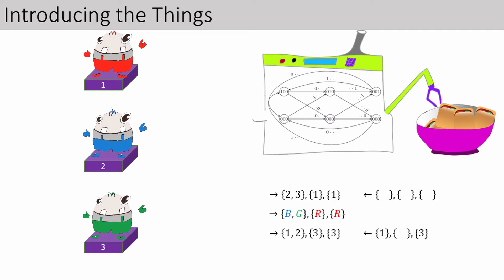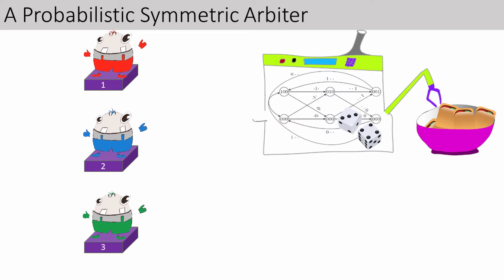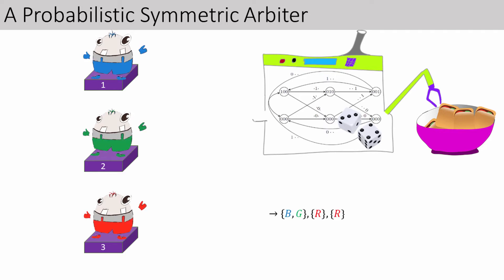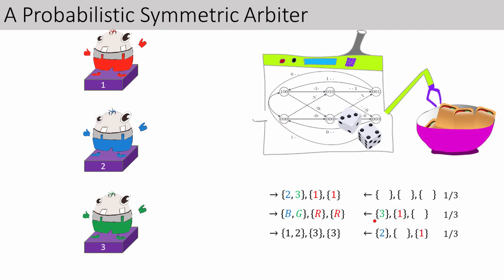One way to achieve this is to equip the arbiter with a source of randomness, and then the starting platform of the round robin is chosen uniformly at random. However the things behave, there are three possible outcomes, uniformly distributed, according to who was chosen to eat first. But if you permute the things and send them to different platforms, the output distribution will be permuted in the same way, thus feeding the same things. So from the things' perspective, it doesn't matter which platform they get on. And that is process symmetry.